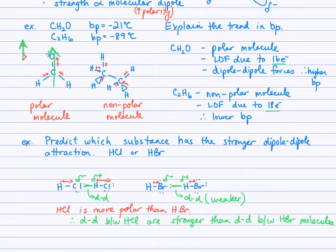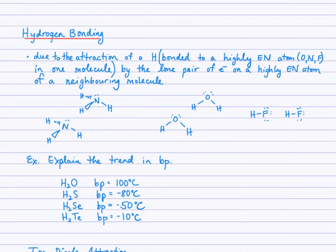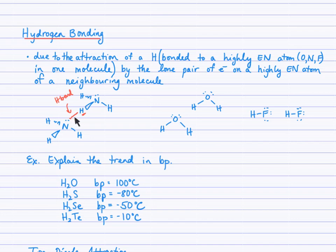Moving on to hydrogen bonding — we've seen this frequently in the organic unit. Due to the attraction of a hydrogen that is directly bonded to an oxygen, nitrogen, or fluorine, a lone pair on an adjacent electronegative atom will attract this hydrogen quite strongly. Hydrogen bonding occurs when a hydrogen is directly bonded to oxygen, nitrogen, or fluorine — the H is attracted by the lone pair on the nitrogen.